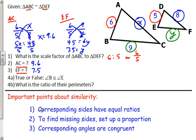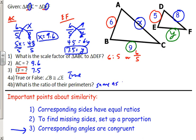You've probably practiced finding missing sides a lot in class since it was a main concept from January. Next, true or false: angle B is congruent to angle E. This is true because B and E are in the same position, meaning they correspond, and corresponding angles of similar figures are congruent. The ratio of the perimeters is the same as the ratio between the sides, so the answer to part 4B is 6 to 5.